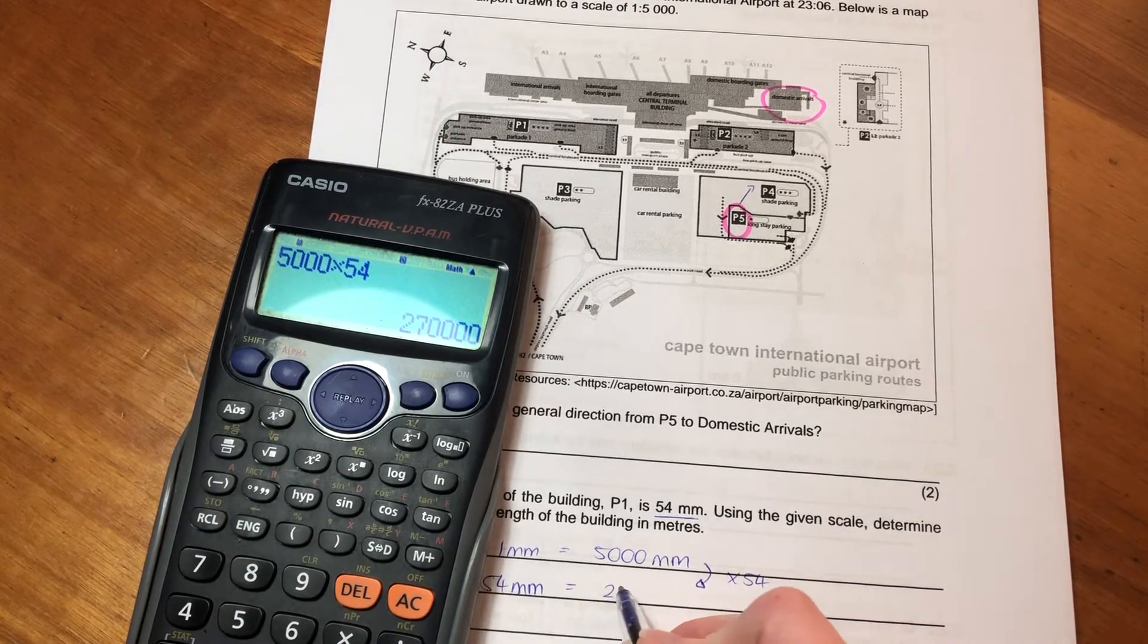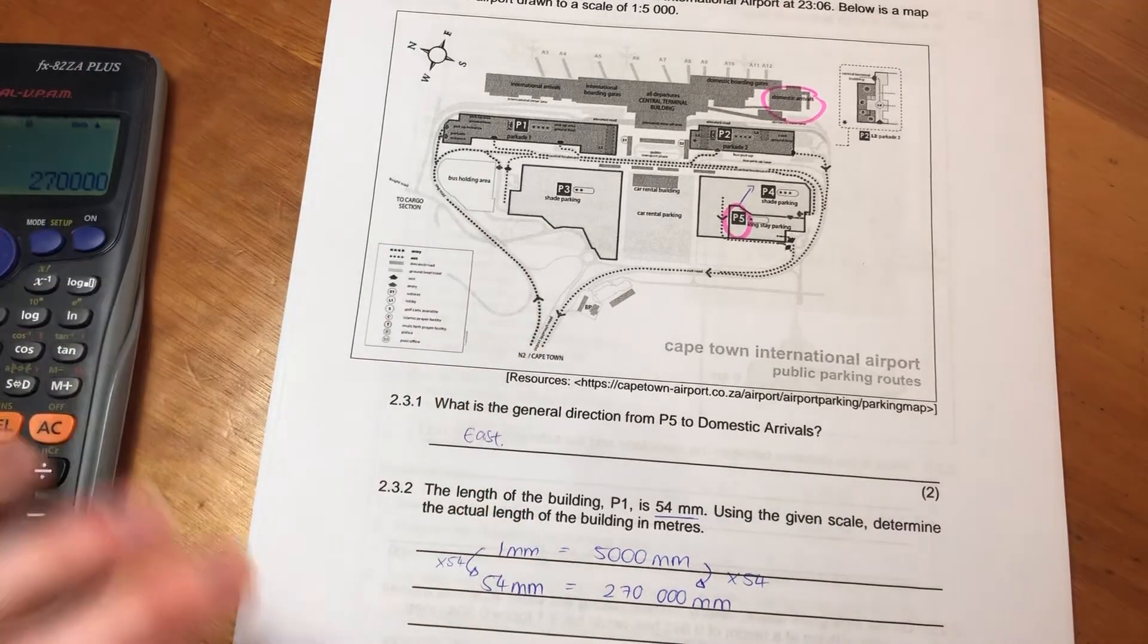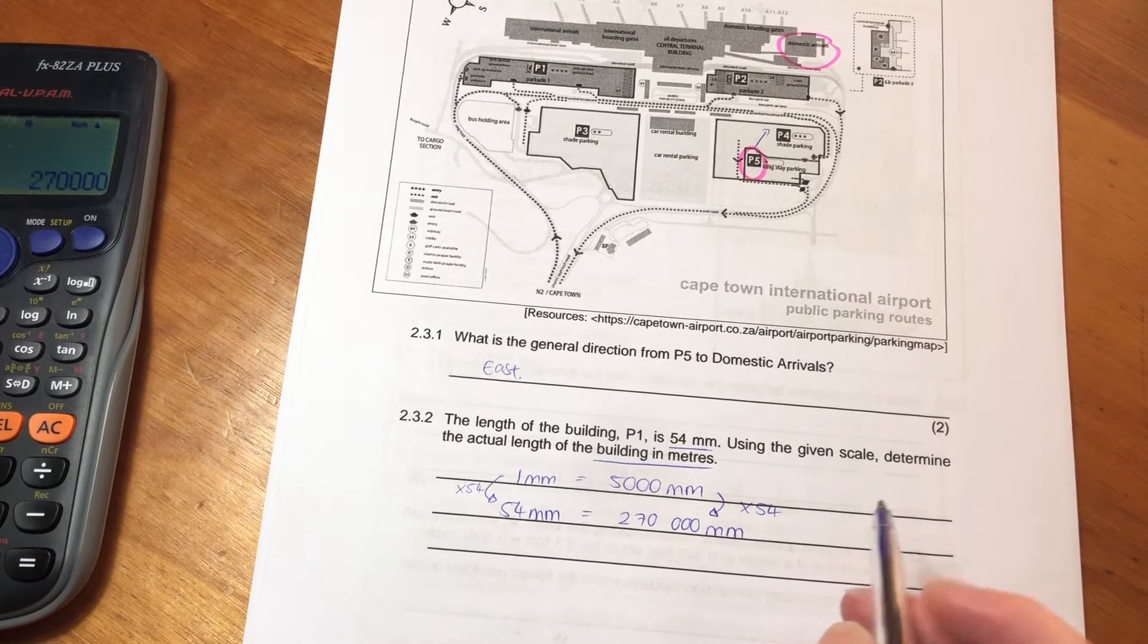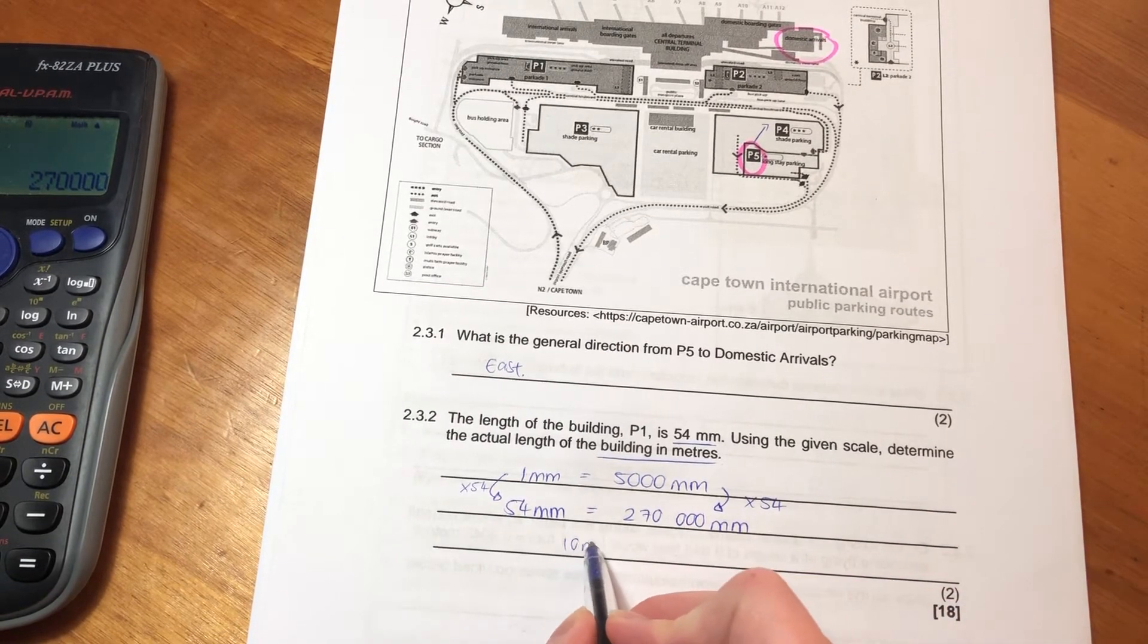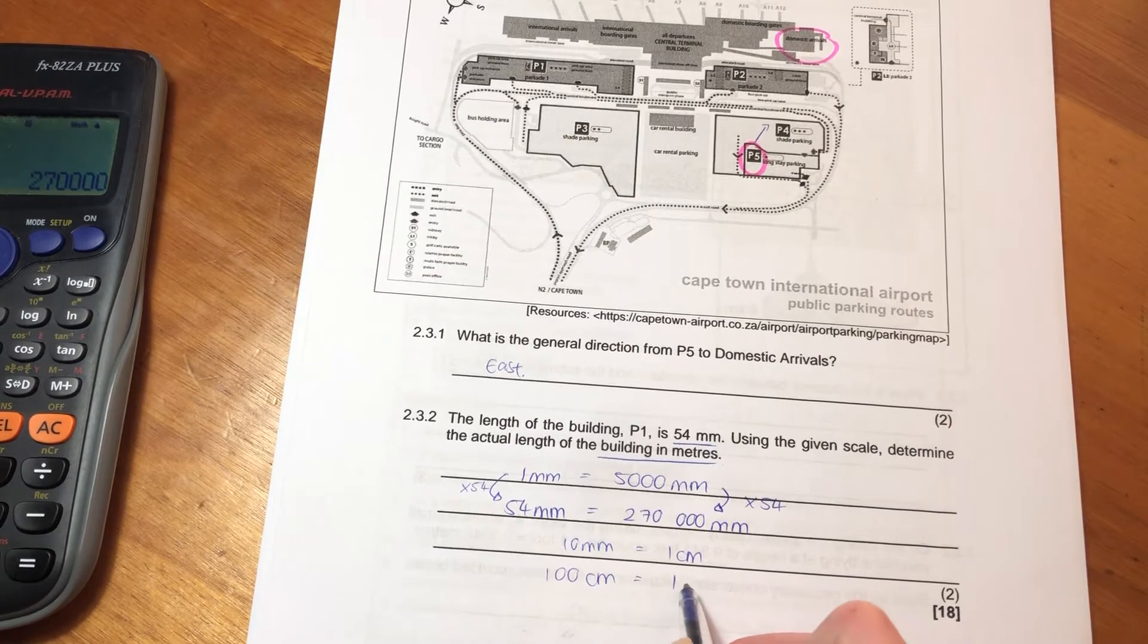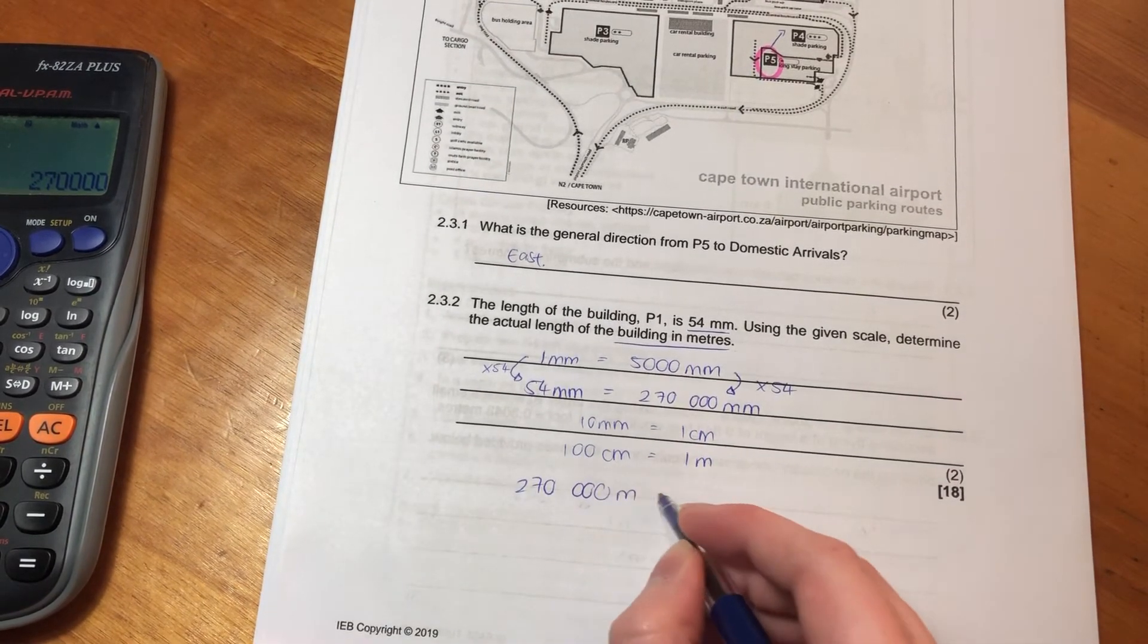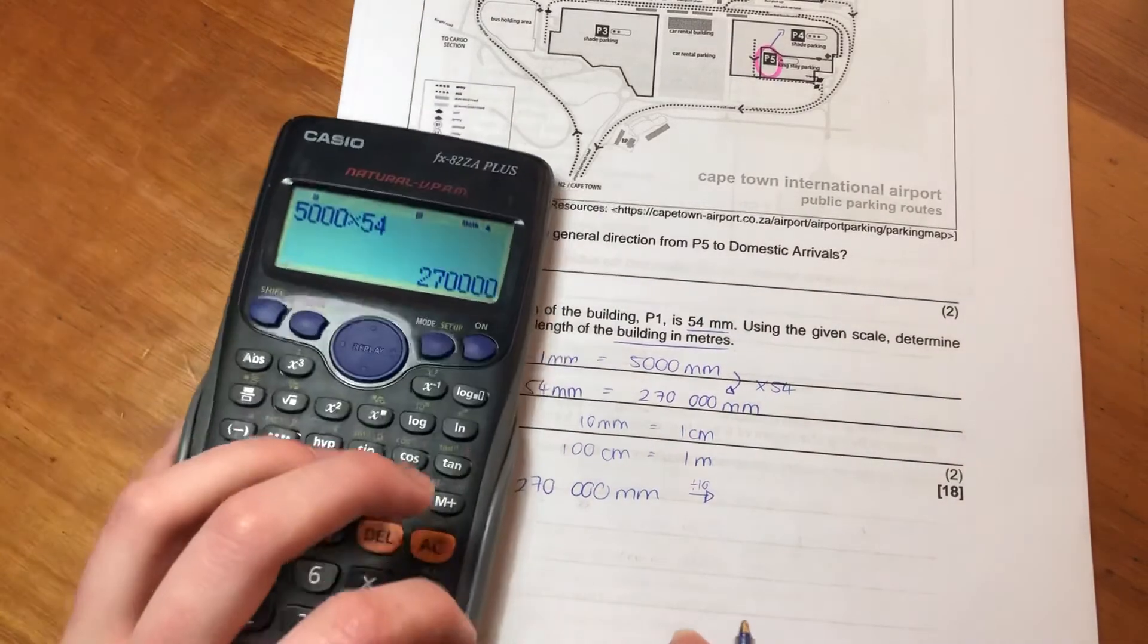But that's still going to be a measure. So we haven't answered the question that they've asked us to answer, because they said the building in meters. So now we have to go from millimeters to meters. So I always do this in two steps, just to remind myself: 10 millimeters equals one centimeter, 100 centimeters equals one meter. So I'm going to go from this many millimeters to centimeters, I'm going to divide by 10. So I'm going to take that, divide it by 10.